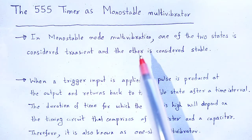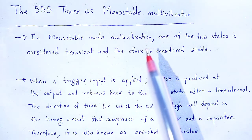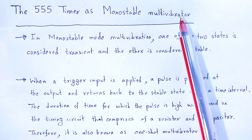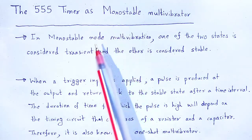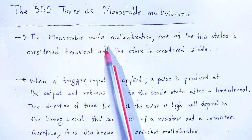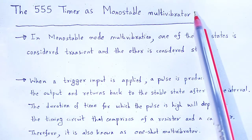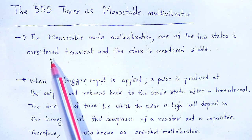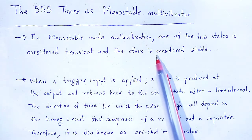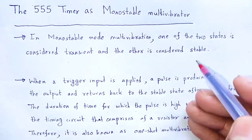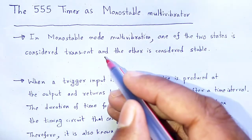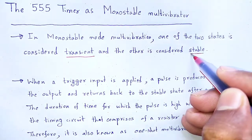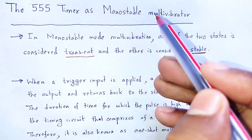A multivibrator operates between two possible states. The name monostable multivibrator means one state is stable. So in case of monostable mode of multivibration, the multivibrator has two states, out of which one is considered transient and the other one is stable. That is why it is called monostable multivibrator.